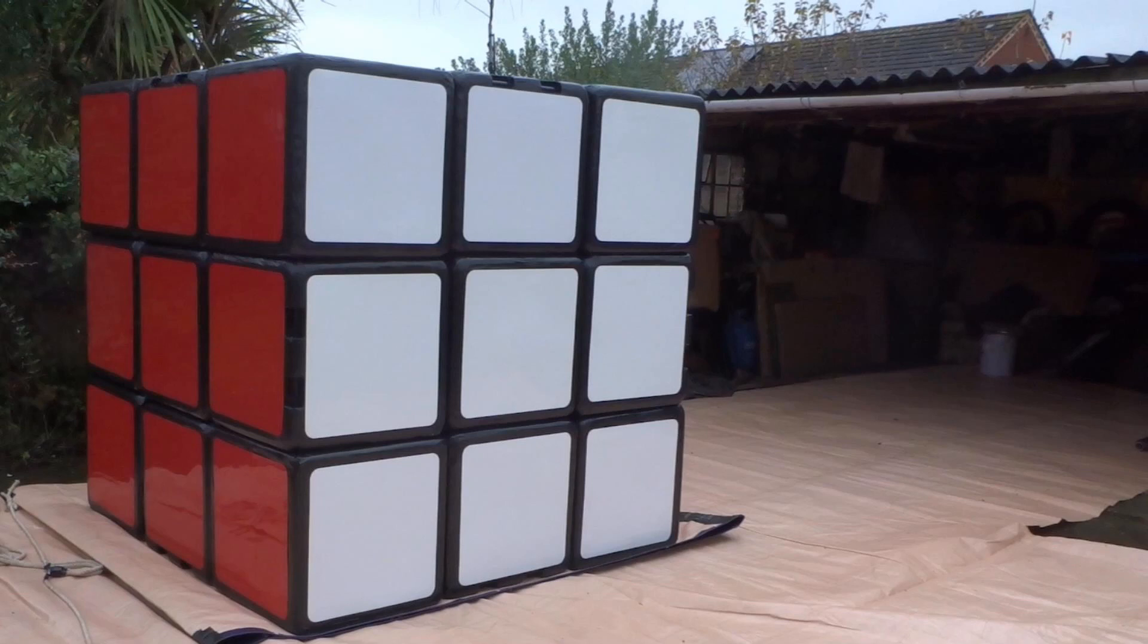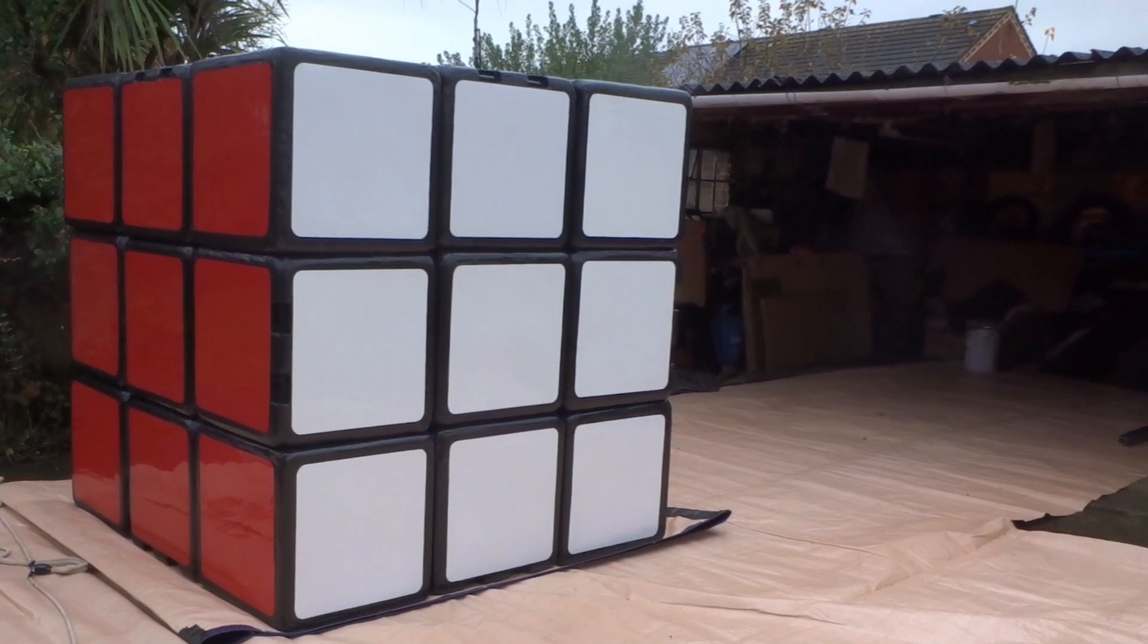Hello, on the left is my 2.02 meter world's largest Rubik's Cube, and on the right is my 5.6 millimeter world's smallest cube. As you can see there's quite a size difference.